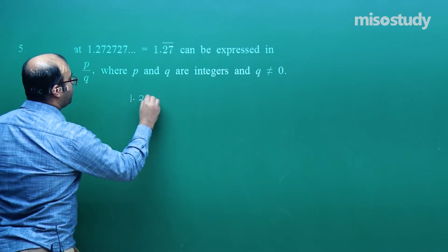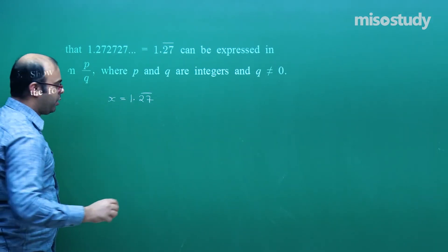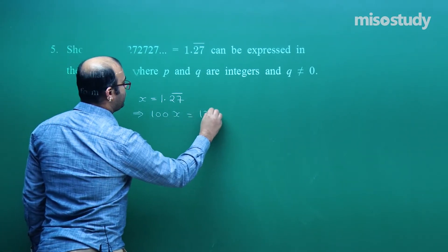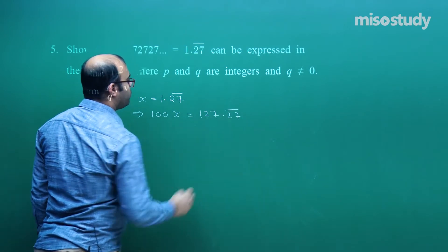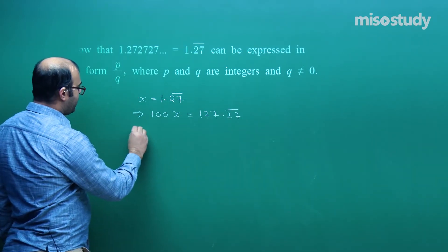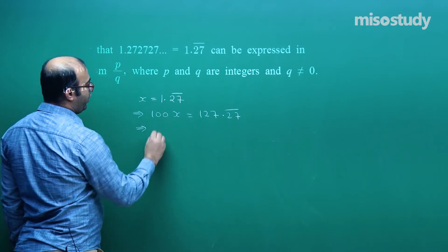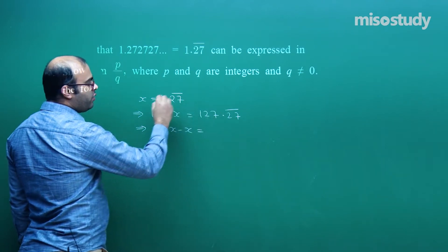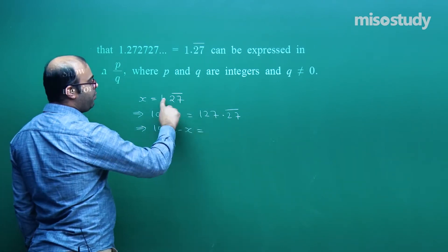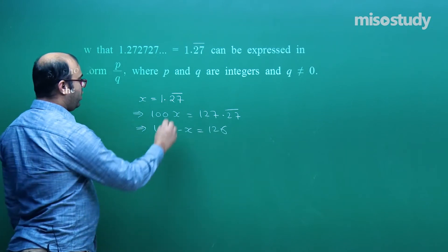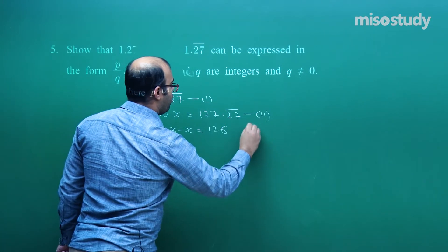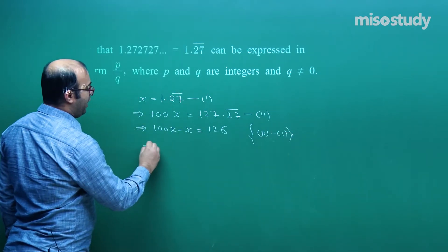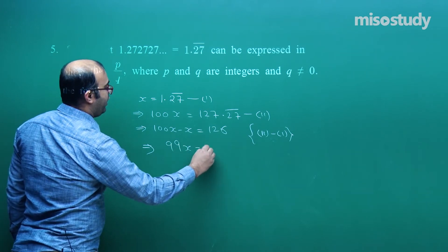Let x = 1.27̄. Since the repeating block has two digits, we multiply by 100: 100x = 127.27̄. We then subtract the first equation from the second: 100x − x = 127.27̄ − 1.27̄. The repeating part cancels: 99x = 126.